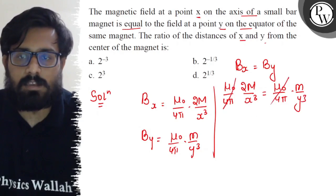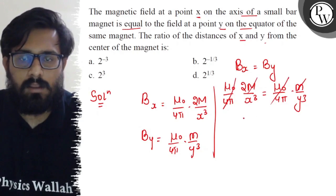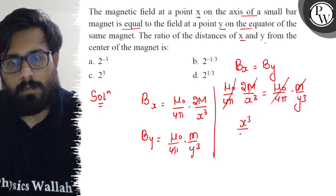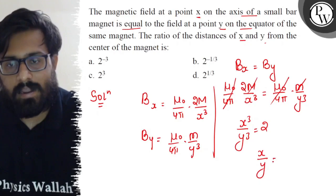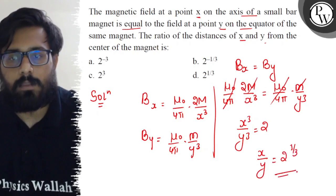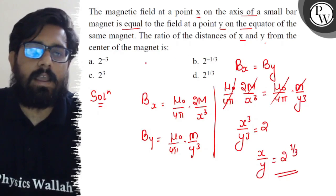μ₀/4π cancel out, m cancels out. So the ratio of x³/y³ comes out to be 2, so the ratio of x/y comes out to be 2^(1/3).